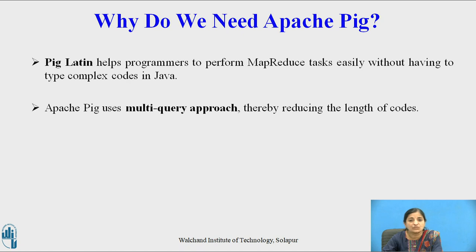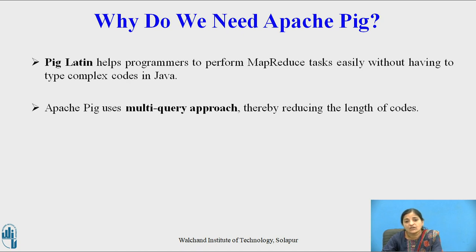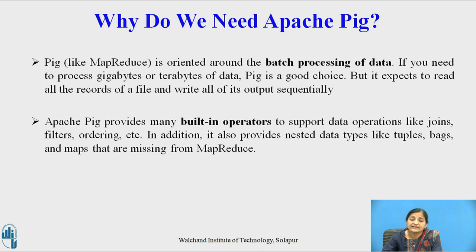Pig Latin helps programmers perform MapReduce tasks easily without having to type complex Java code. Some programmers are not good at Java, and when they want to write MapReduce tasks for Hadoop, they find it very difficult. Writing MapReduce tasks in Java takes nearly 200 lines of code, but doing the same task in Apache Pig requires hardly 10 lines. So for such programmers, Apache Pig is a boon. It uses a multi-query approach, thereby reducing the length of the code. Pig is oriented around batch processing of data — if you need to process gigabytes or terabytes of data, Pig is a very good choice.